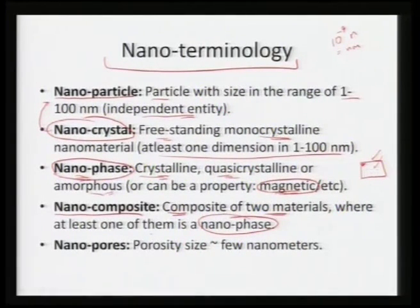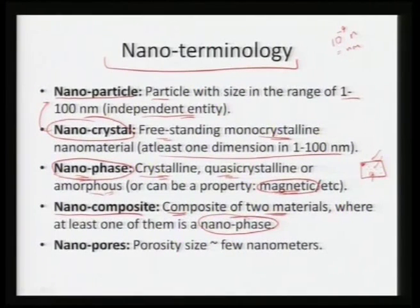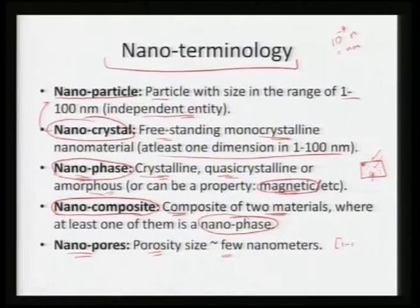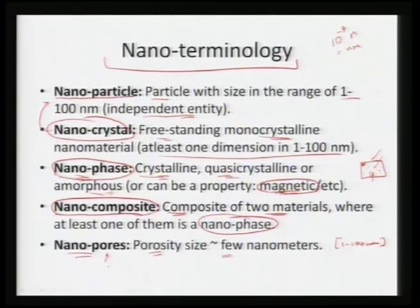In a nanocomposite, at least one of the phases is nano — meaning that particular phase is either crystalline, quasi-crystalline, amorphous, or has a certain associated property, and it exists in a mixture with some other matrix or multiple nano-phase matrices. Nanopores are porosity with a size range of a few nanometers — 1 to 100 nanometers. So it is not only a phase or free-standing structure; pores can also be nano in size and impart very nice properties.